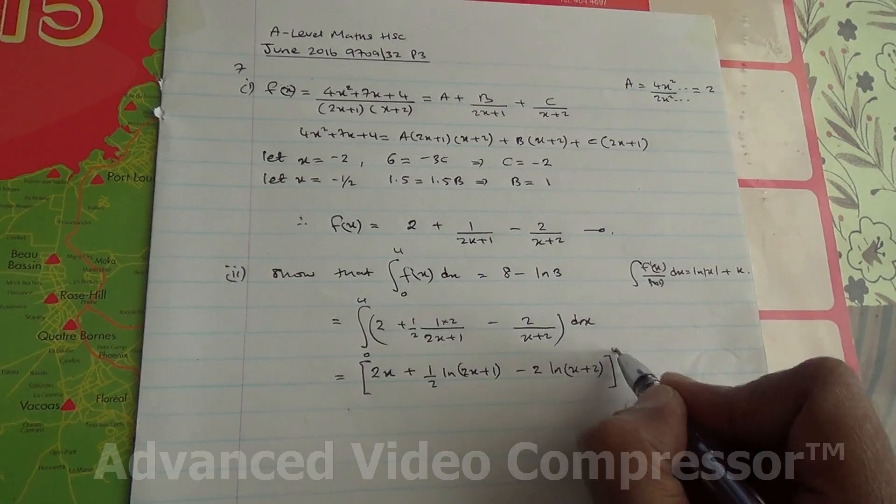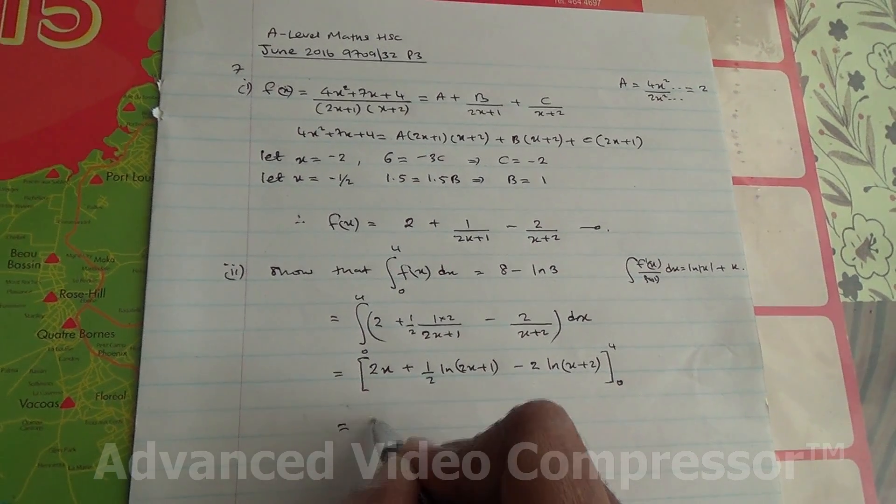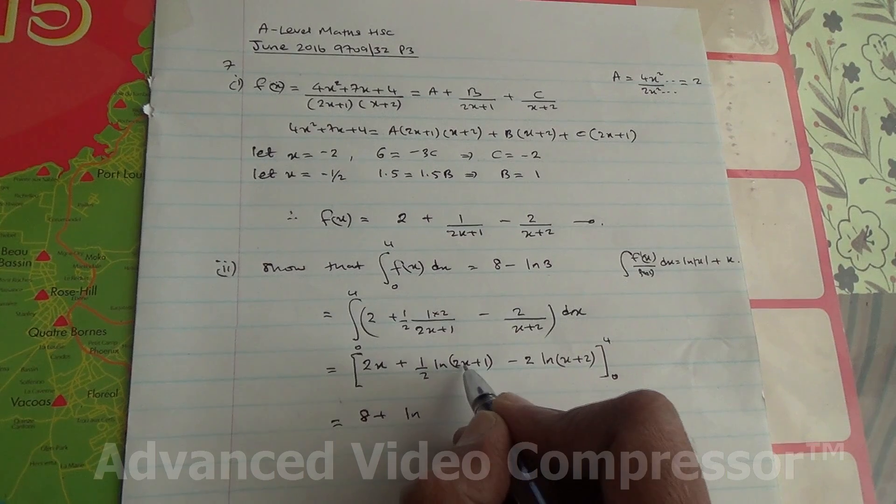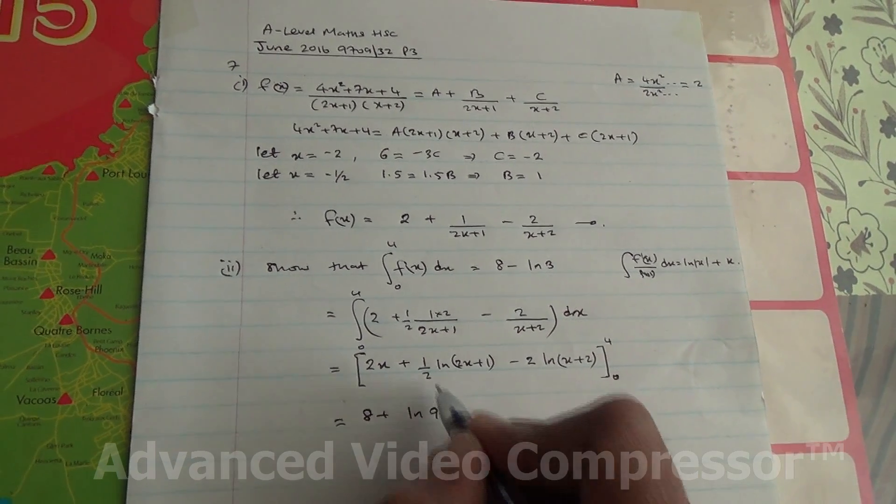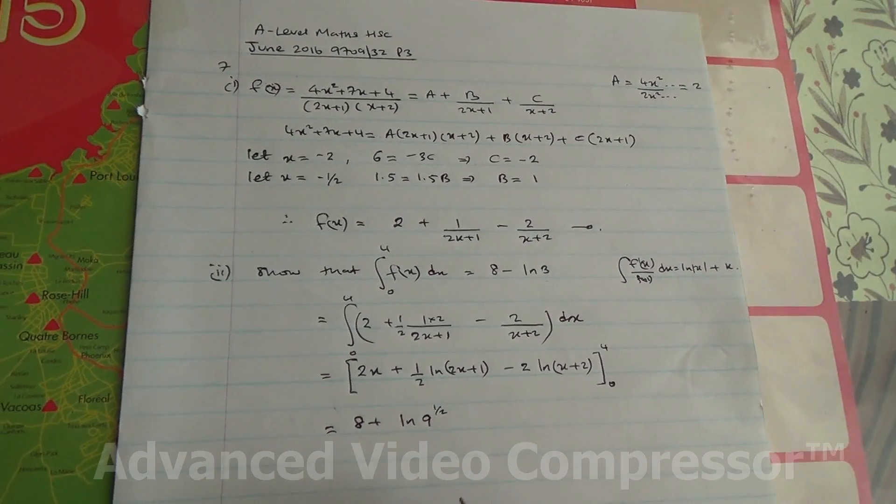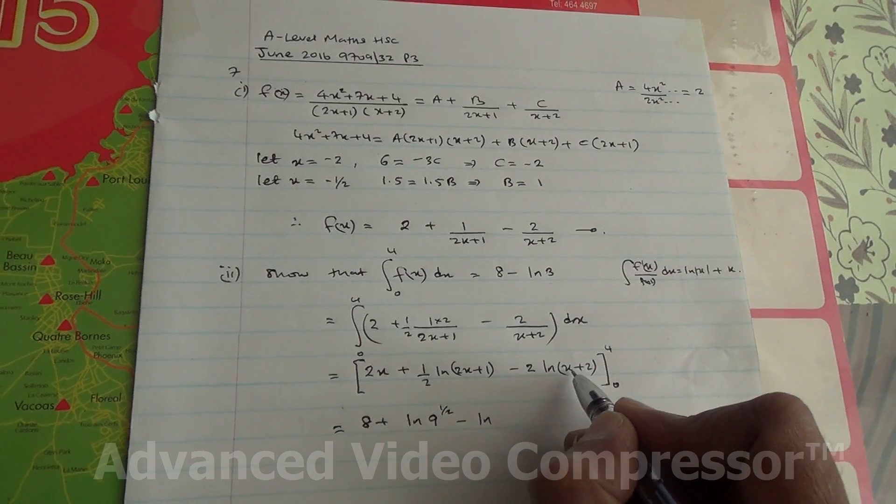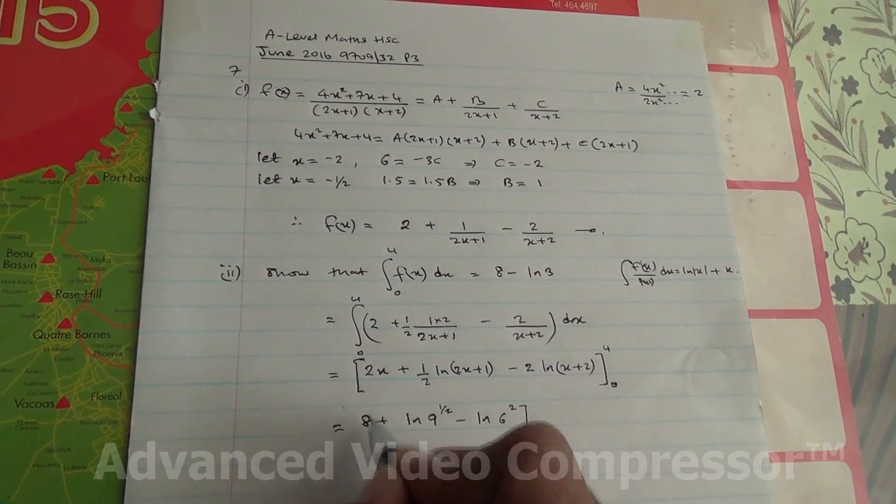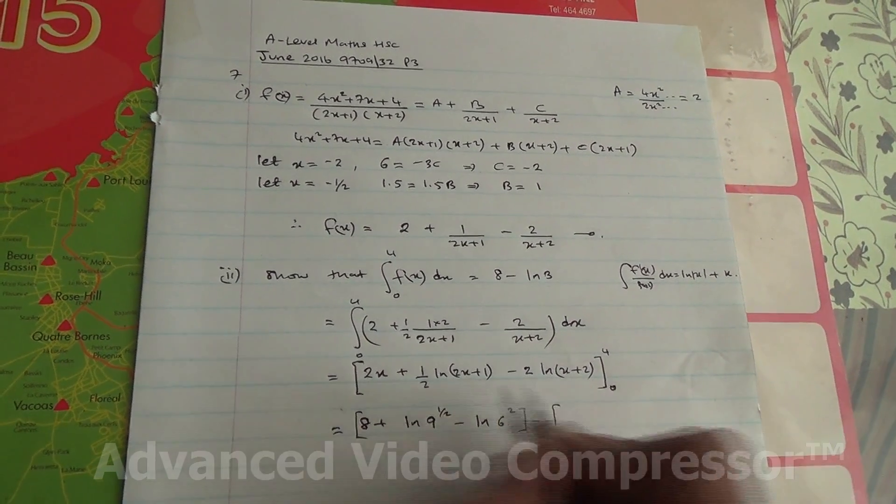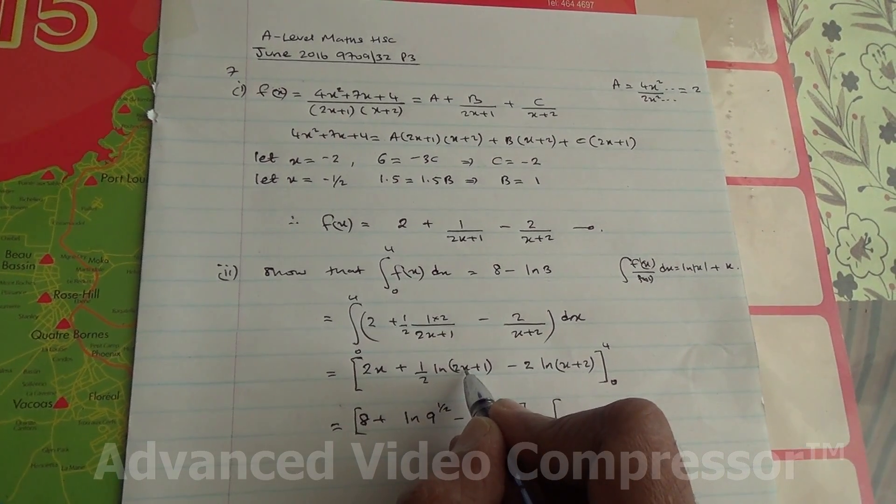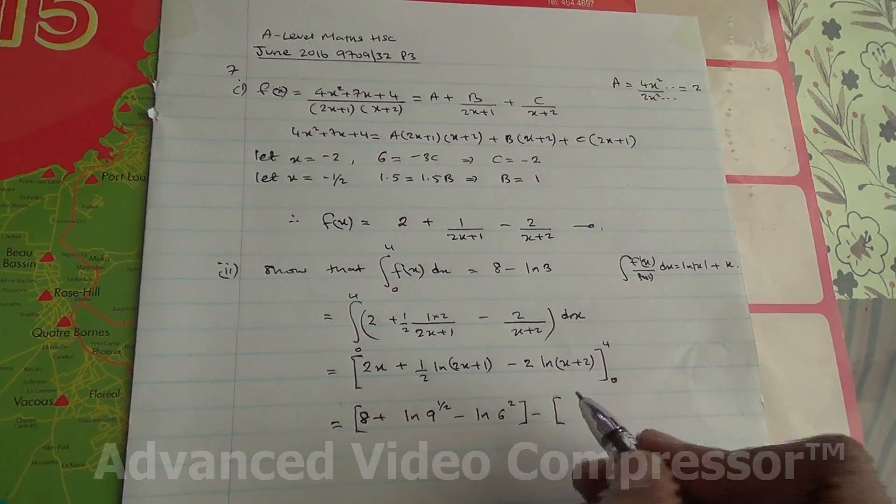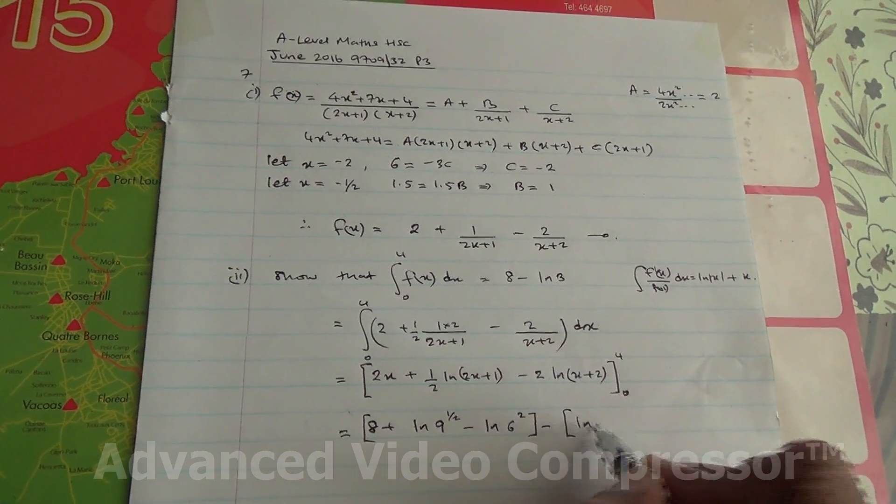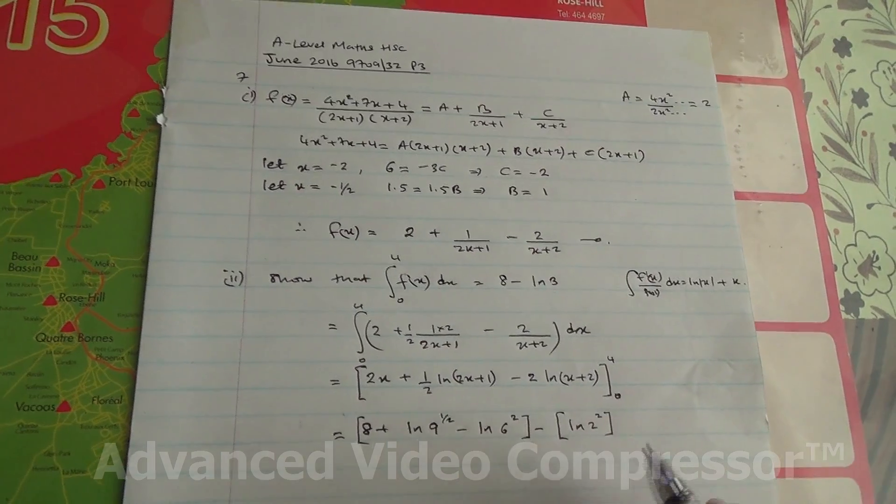So 4 goes in here. 2 times 4 is 8 plus half ln(2 times 4 is 8, 8 plus 1 is 9), so ln 9, and the half becomes the power, to the power of half. Minus then also ln(x is 4, 4 plus 2 is 6), so ln 6 and the 2 becomes the power. Minus 0 in here is going to be 0. 0 in here is going to be 2 times 0 is 0, plus 1, so half ln 1, which is 0 again. And what about (x plus 2)? So 0 plus 2 is 2, so we've got ln 2, then the 2 becomes the power, 2 to the square.